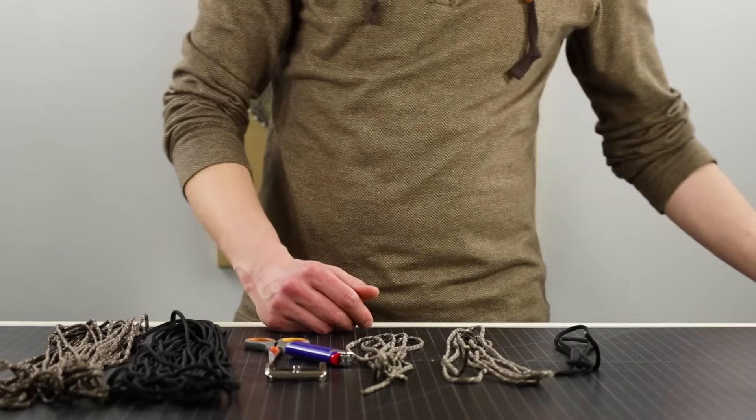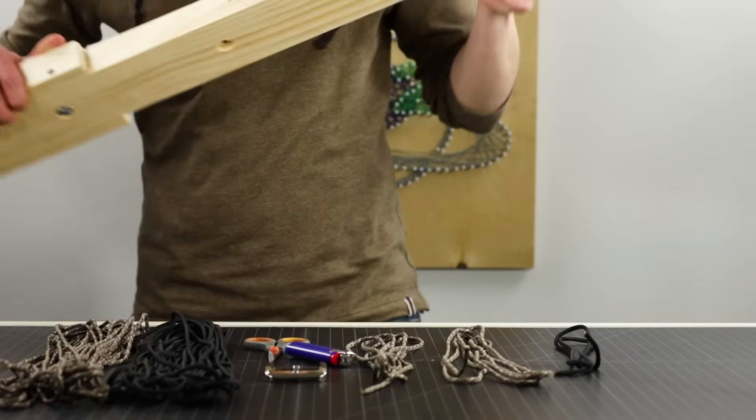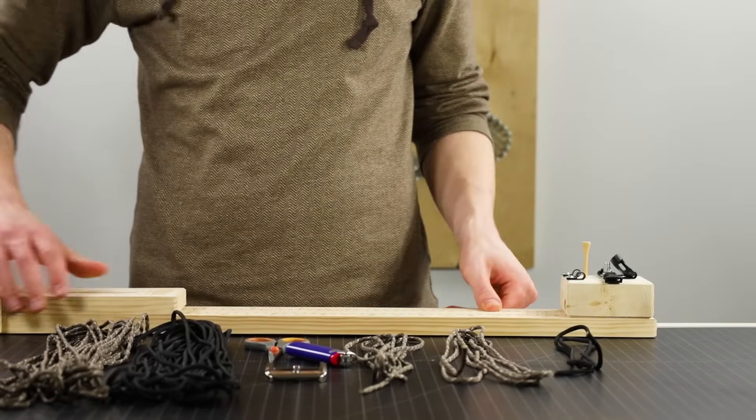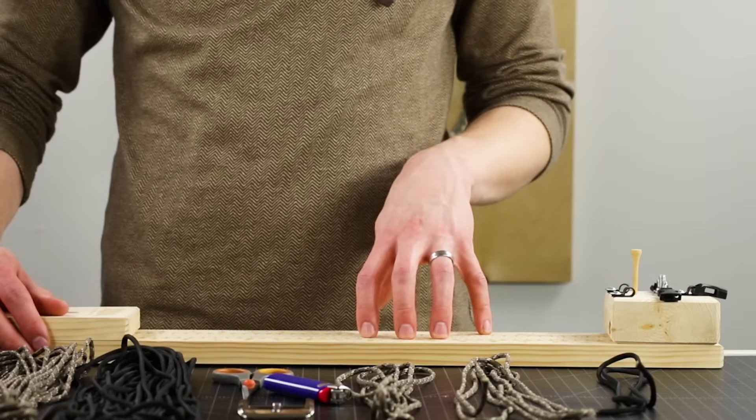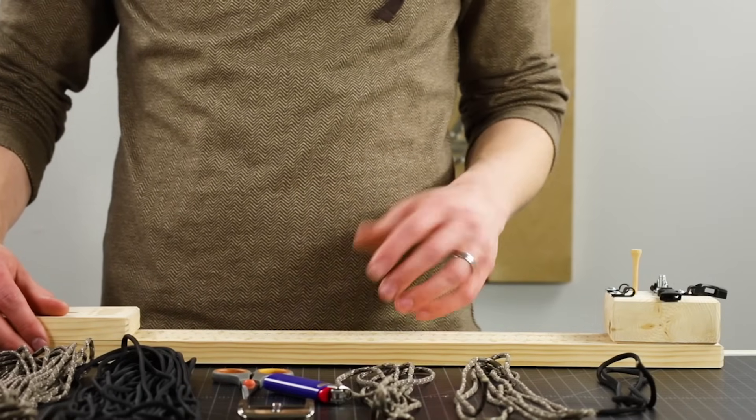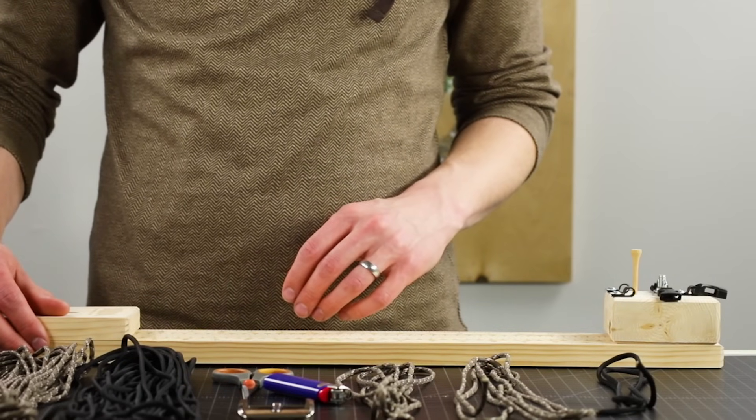The other thing we'll be using today, and you do not need this, but it is our ultimate jig by Jig Pro Shop. So this jig is very helpful for making gun slings and also belts that we're gonna be using it for today. So let's get it set up.